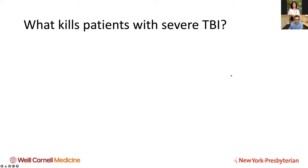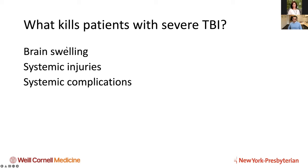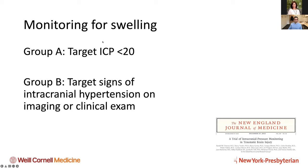Once you've stabilized the patient and addressed immediate surgical lesions, think about what's going to kill your patient. Severe TBI has a high mortality. The most important thing is brain swelling — that's what you'll be really focused on over the following week. There can also be systemic injuries and systemic complications like pneumonia and sepsis. Standard of care in the US has long been invasive ICP monitoring, though it's not entirely clear this is necessarily the best or most necessary approach.